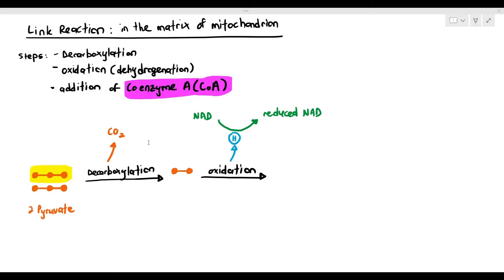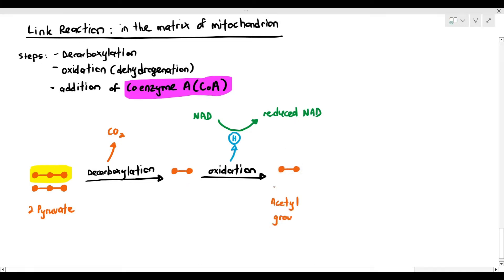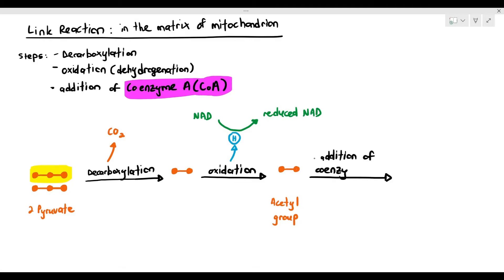After oxidation, you are left with a two-carbon molecule called the acetyl group — it's good to remember that name. The problem with the acetyl group is it needs to go into the next reaction, which is called the Krebs cycle. But it needs to be carried or transported into the Krebs cycle, and to do so, you need to add it to something called coenzyme A.